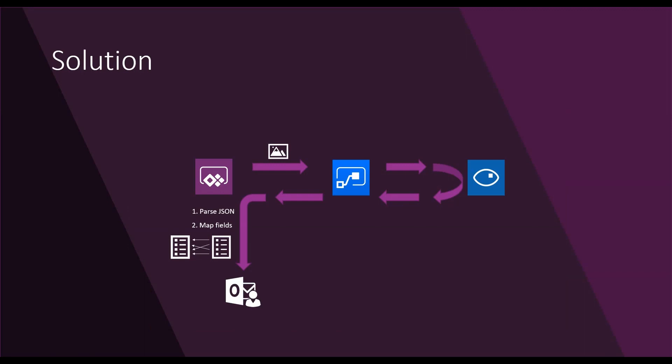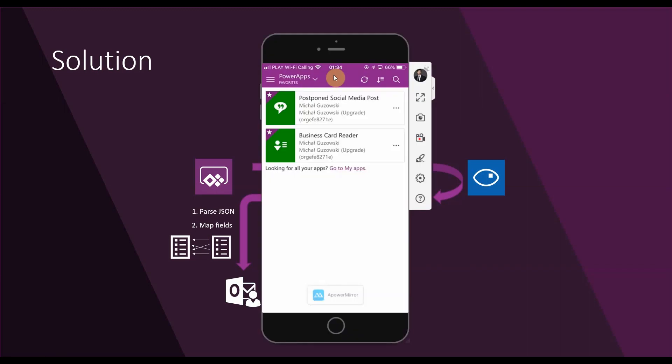That's why I created a simple solution made with Microsoft platforms — Power Apps for taking a photo, which is then passed to Microsoft Flow. Flow uses Azure Cognitive Services, specifically the Vision API, to perform character recognition (OCR), and then Flow passes the recognized text back to Power Apps where the user can do simple mapping of which fields are which.